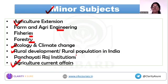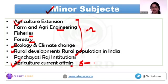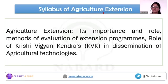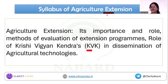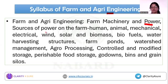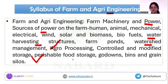From these minor subjects you can expect around 1-2 questions, and from Agriculture Current Affairs there could be around 5-8 MCQs. Let's briefly discuss the syllabus for different minor subjects. Under Agriculture Extension, the focus is on different agriculture teaching methods and KVK. For Agriculture Engineering, the focus is on farm and sources of power, different water harvesting structures, watershed management, different agro-processing and post-harvest technology including grain storage structures.